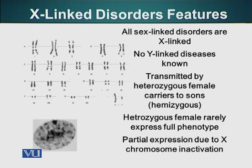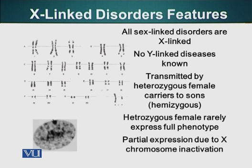Heterozygous females rarely express the full phenotype. Heterozygous females, meaning females having two X chromosomes — one with a defective copy of a gene and the other with a normal gene. We have two alleles for a particular gene: one allele is defective, the other is normal. Recessive disorders manifest themselves if both copies of a particular gene are defective. In this case, this is an exception because males have one X chromosome and females have two X chromosomes, so females have twice the dose of X chromosome compared to males.